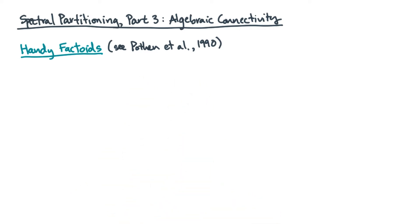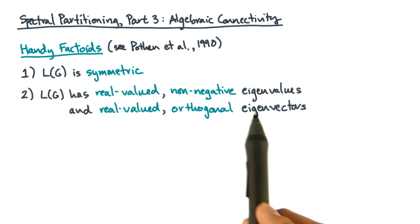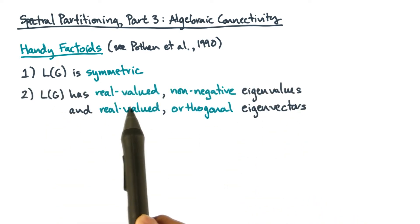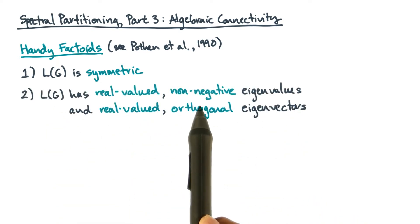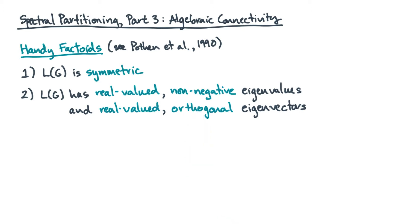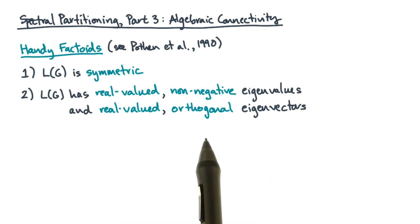The first key fact is that the Laplacian is symmetric. This follows from its definition. An important consequence of this fact is the second fact: the eigenvalues of the Laplacian will be real-valued and non-negative — real-valued as opposed to complex-valued. The Laplacian's eigenvectors will also be real-valued, and we can define them to be orthogonal.